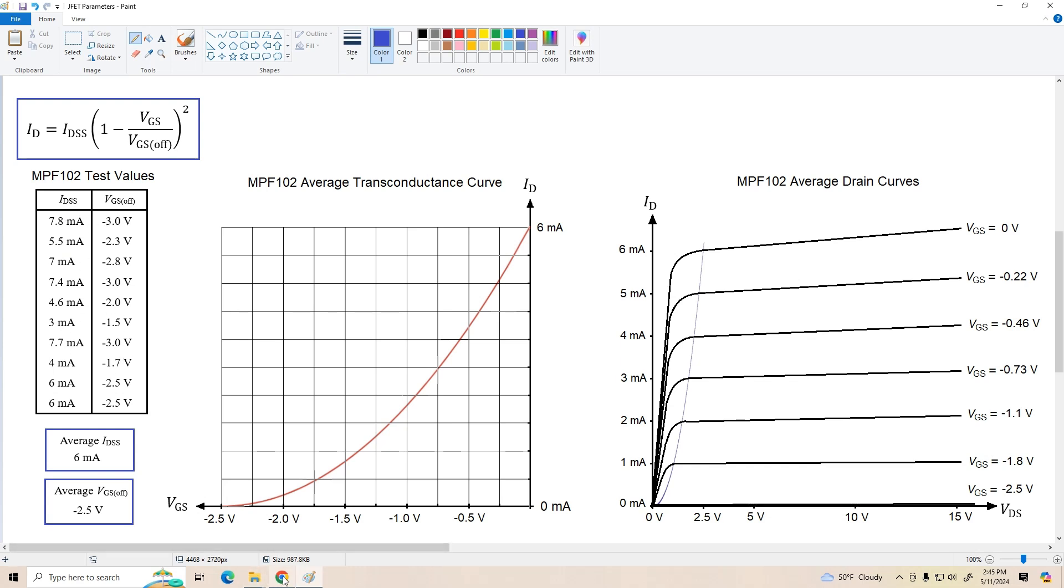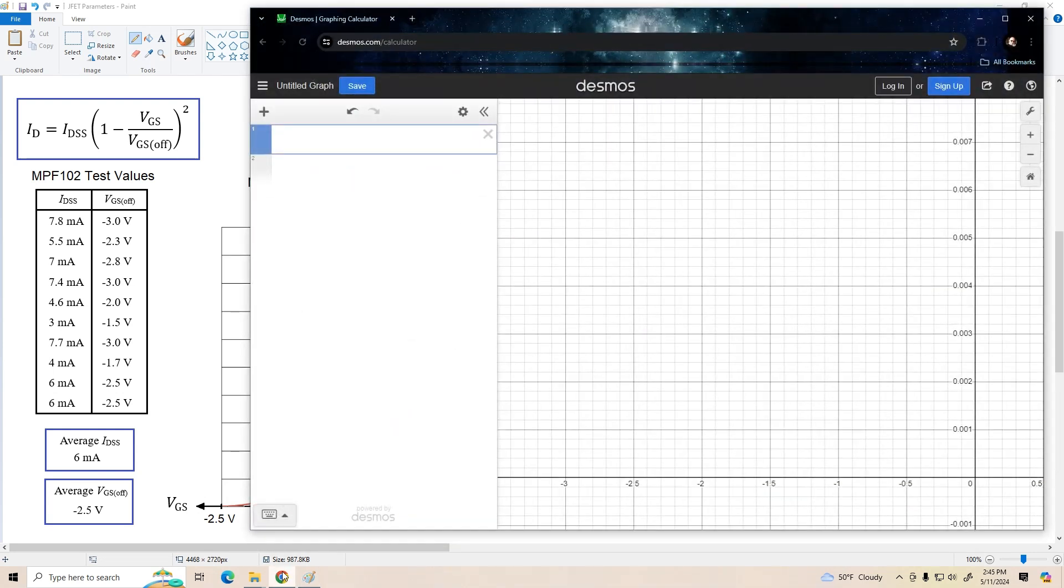And I'm going to use a program called Desmos. This is an online equation graphing package. It's really nice and easy to use. And what I'm going to do is enter the values for Shockley's equation here and plot some of these transconductance curves. And we'll do some comparisons here. So let's start with the first one. We had an IDSS of 7.8 milliamps. So we're going to have 0.0078 times 1 minus VGS is going to be the x value. So it's just x divided by VP, which is negative 3. And then we're going to square that. And here's our transconductance curve for this first set of measurements. Okay. Now notice that Desmos is going past the vertex of the parabola. Normally our JFET data just stops right here, but the calculator shows all of it.